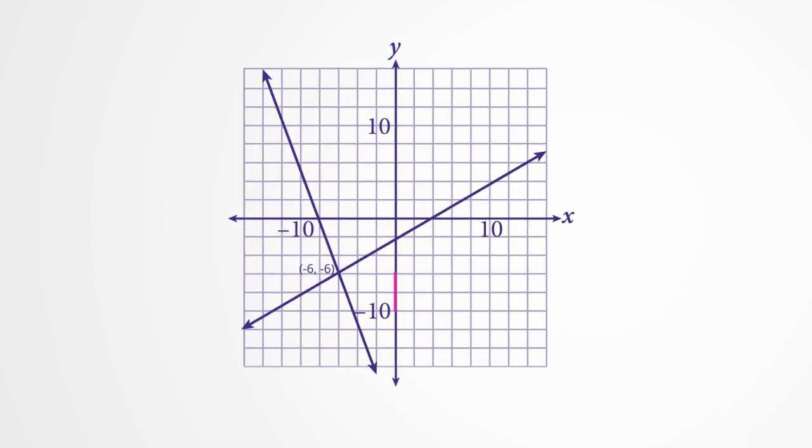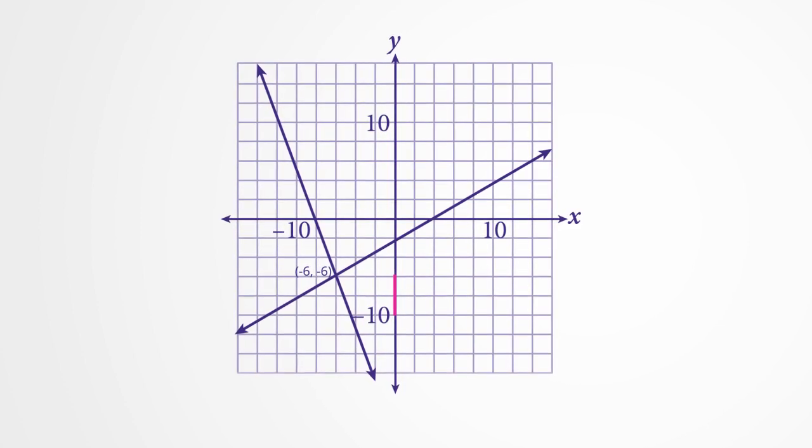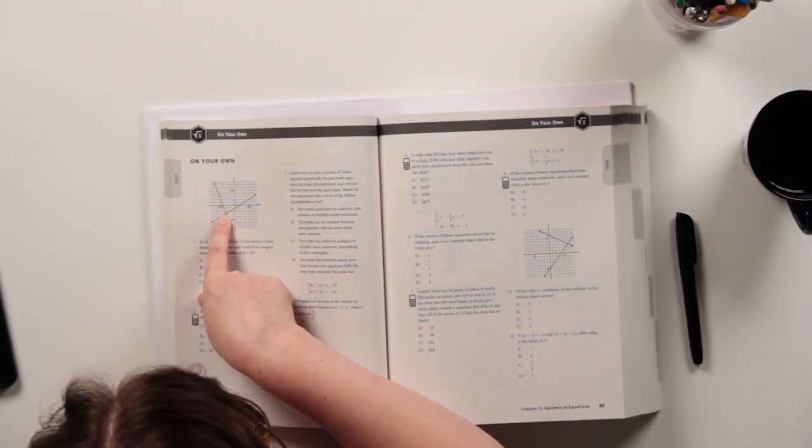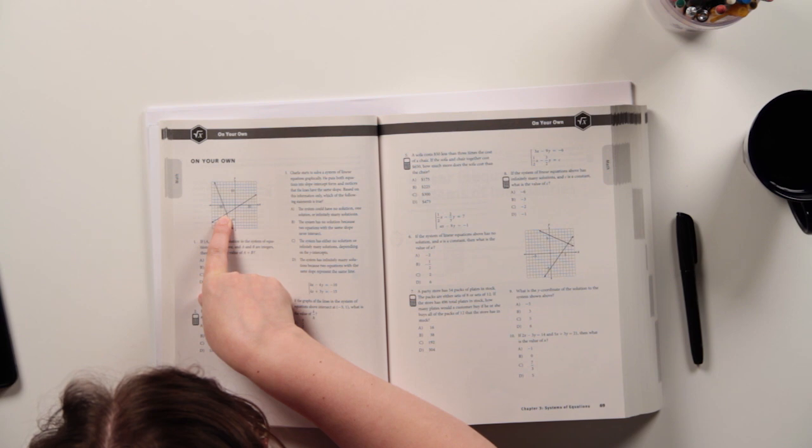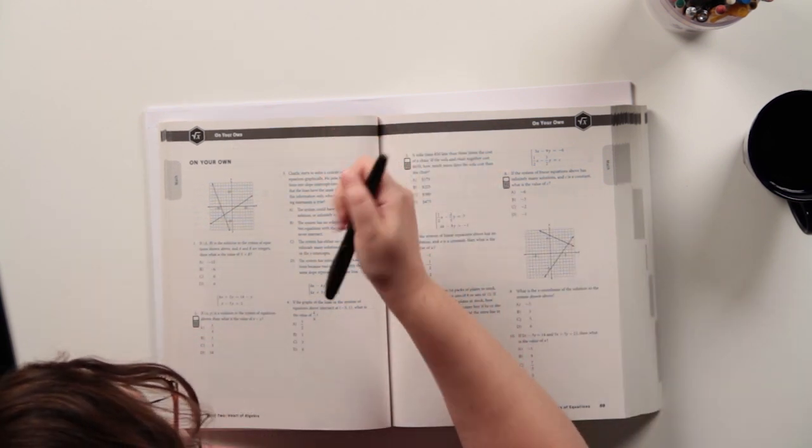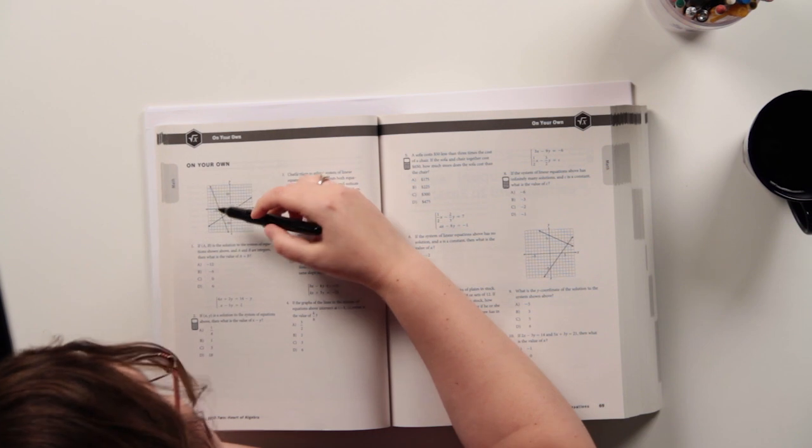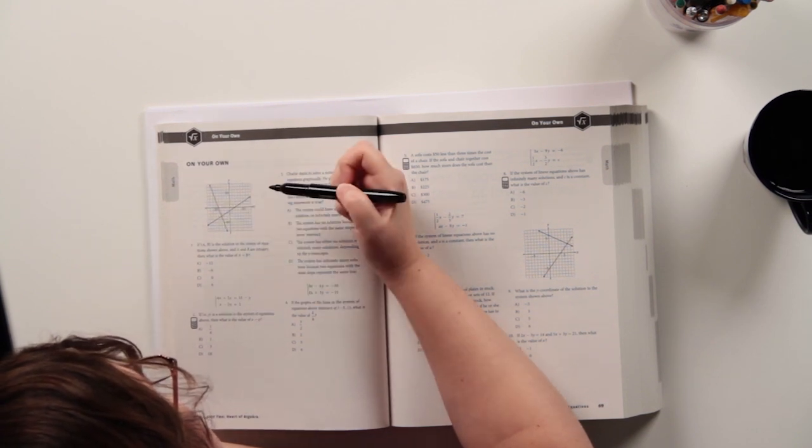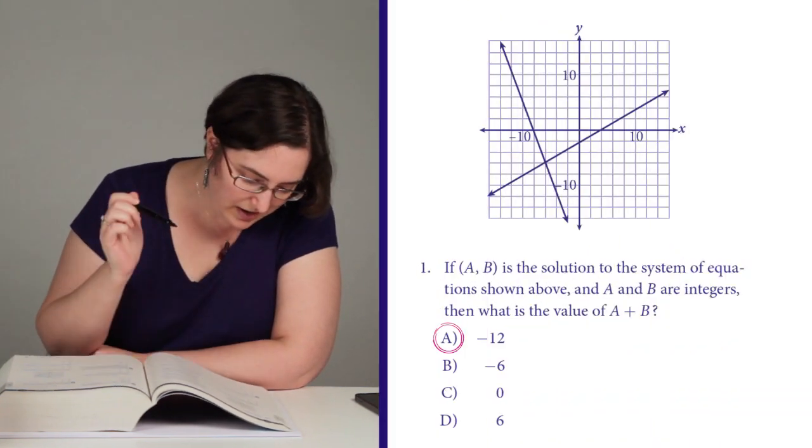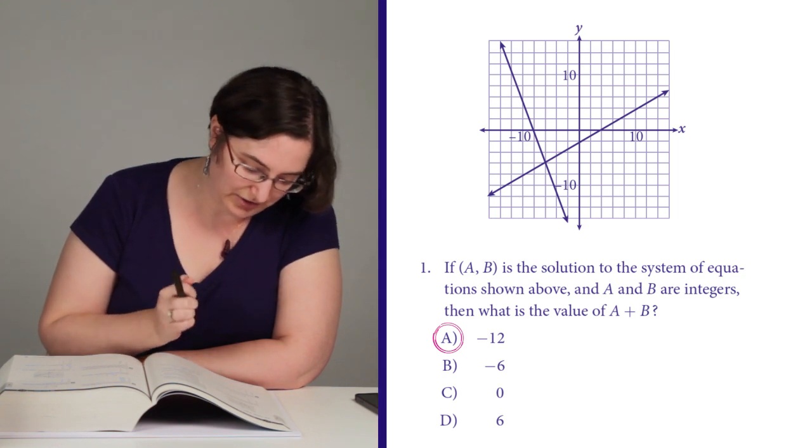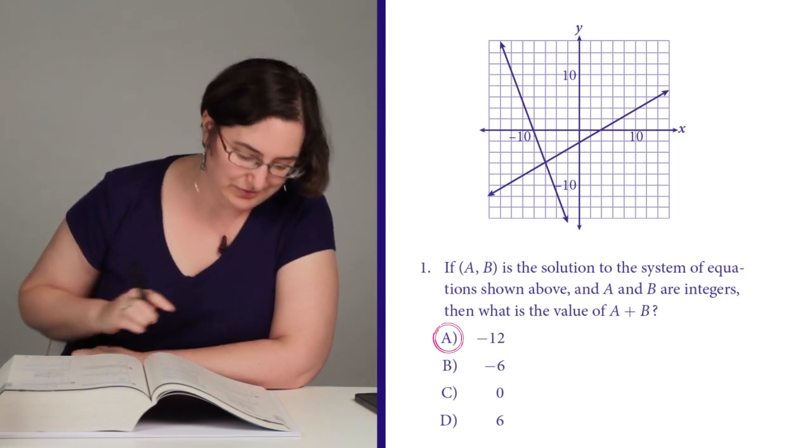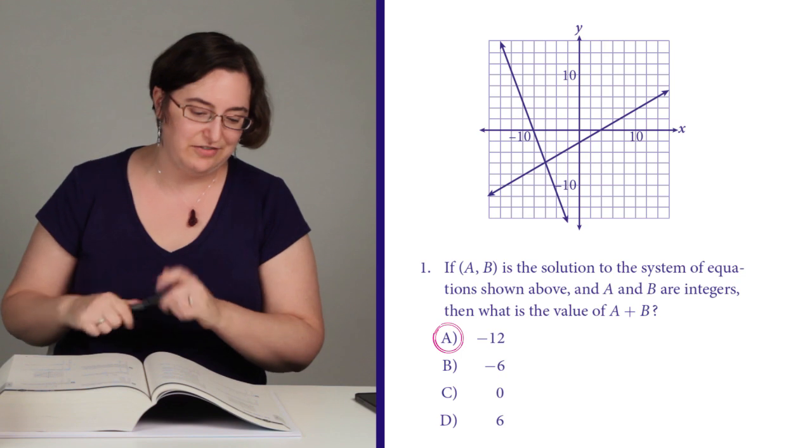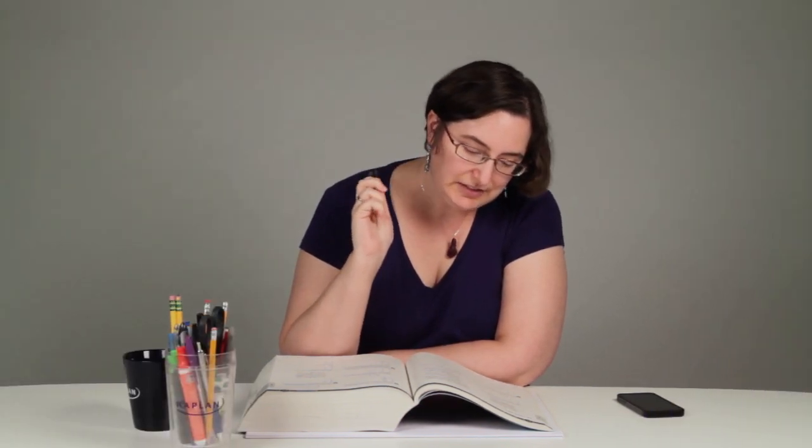So this value up from that is going to be, this is a negative 6y value and then also a negative 6x value, so if I add those together I'll get negative 12, which is a. And I'm looking at b and going that is totally a trap answer for people who didn't read their coordinate plane carefully, because if I thought they were both negative 3, that's what I would have gotten. Tricky SAT.